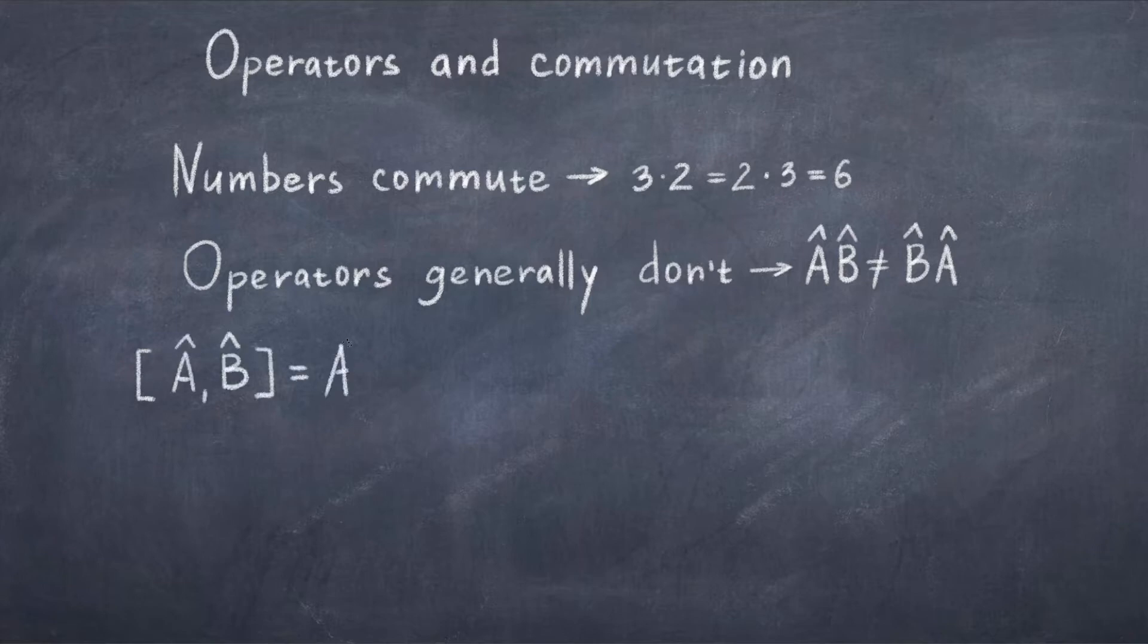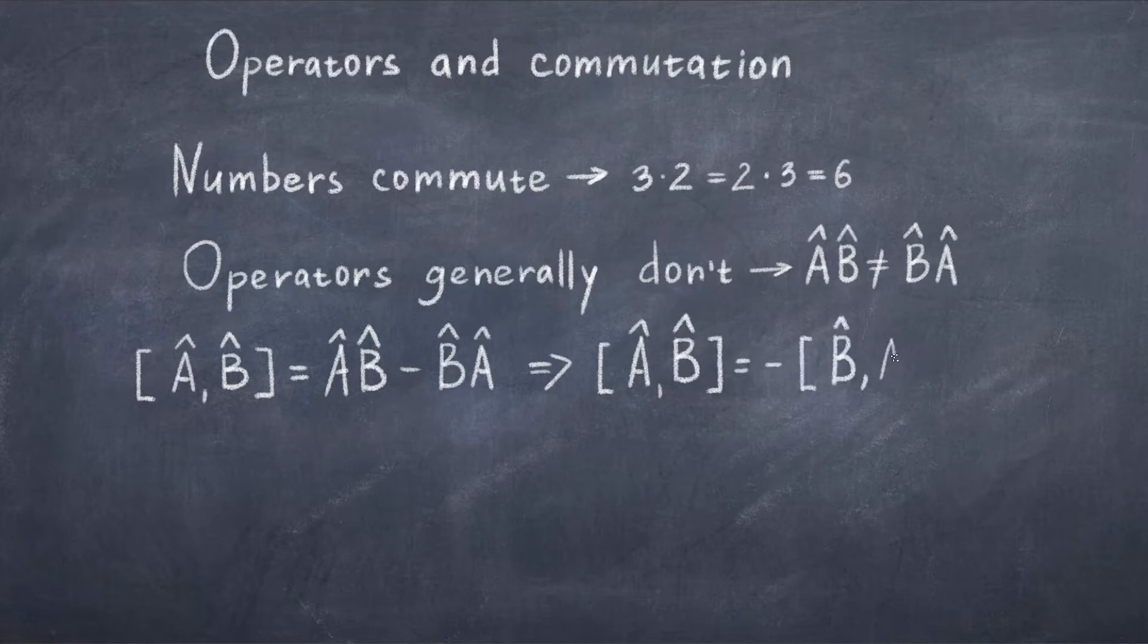In quantum mechanics, things are more complex and we have operators which do not necessarily commute. Which means that for two general operators A and B, we have that AB is not equal to BA. Thus, we can write the commutation relation using bracket notation [A, B] in brackets is equal to AB minus BA. From this equation we can also see that the reverse relation is almost the same, but with a minus sign in front.